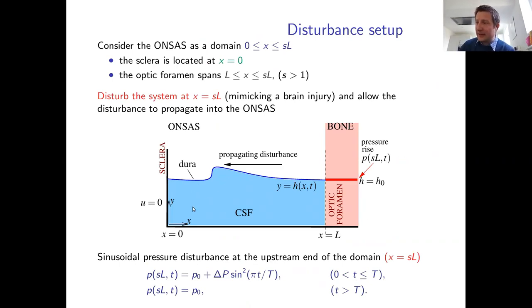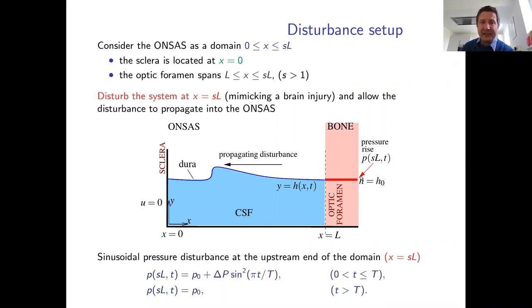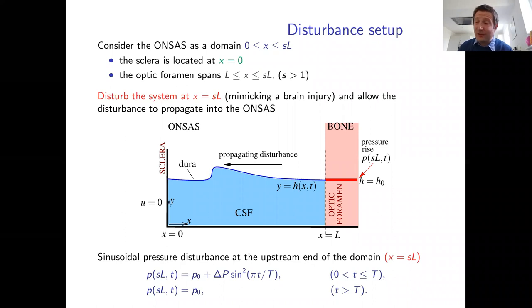The blue region represents the CSF in the ONSAS; the optic foramen is highlighted in pink, indicating where flow is more tightly confined. A pressure disturbance is applied at the brain end — the far right of the domain — simulating what happens during injury. Any disturbance cannot penetrate the rigid, impermeable sclera, so it is reflected there. A sinusoidal pressure disturbance is applied with amplitude ΔP (in mmHg) and time scale T (in seconds).